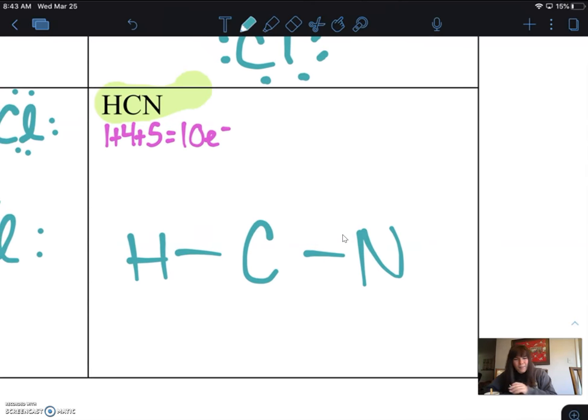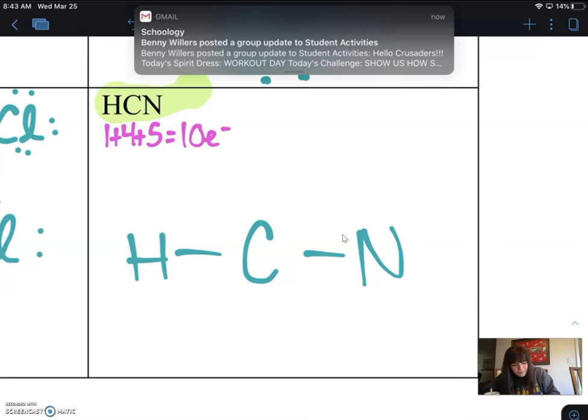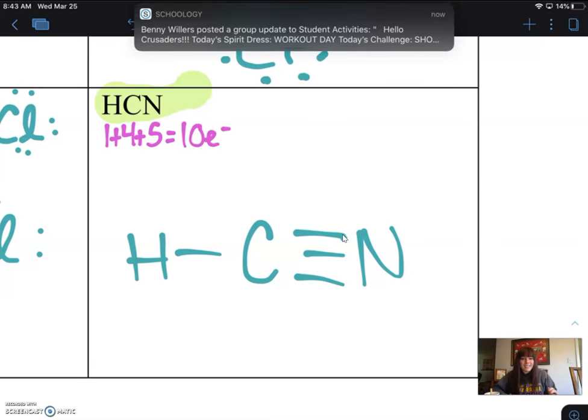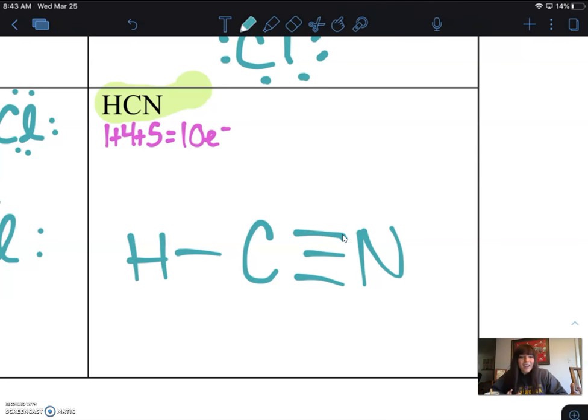So I'm going to give that nitrogen the three bonds it needs. And in doing so, I have given my carbon the four bonds it needs. So now I'm just going to do a quick check through. How many electrons do I have on here? I've got 2, 4, 6, 8. I only need to put out two more and that's going to go on nitrogen because it's the only one thus far that doesn't have a full valence. Boom.